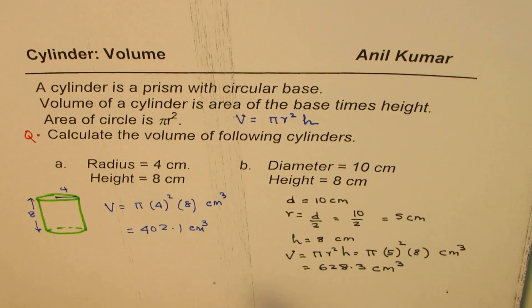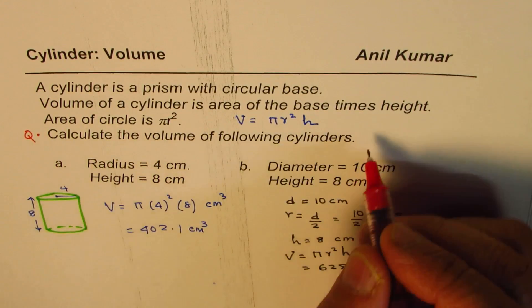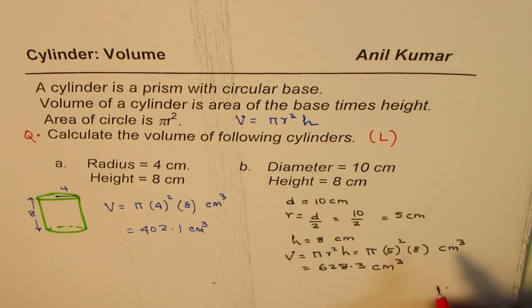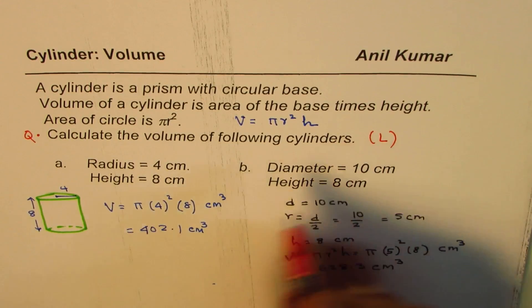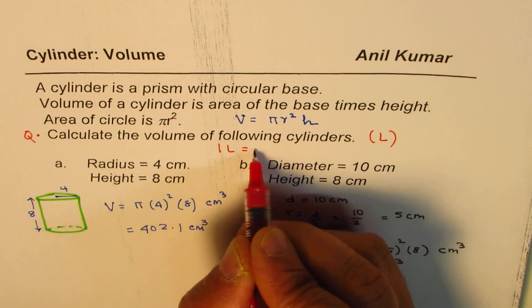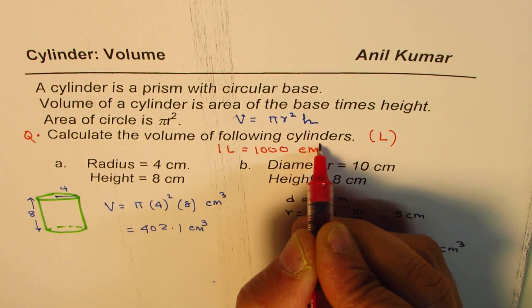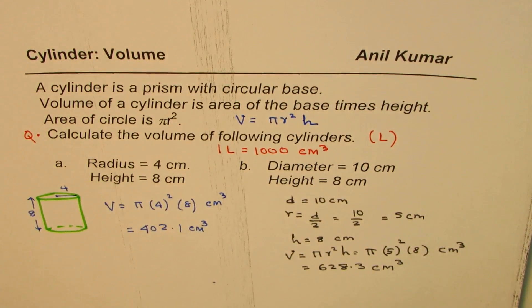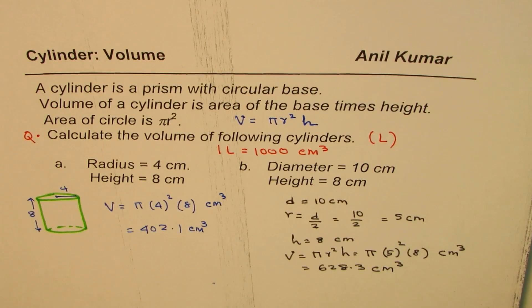Now, as an added exercise, can you calculate the volume in liters? Let me give you the conversion. One liter equals 1000 centimeter cube. So now you can do the conversion, write your answer in liters.